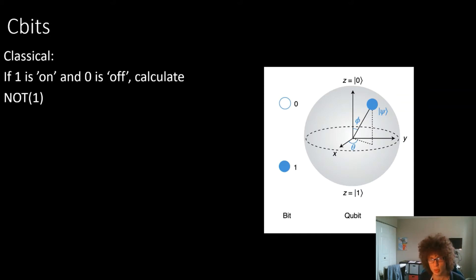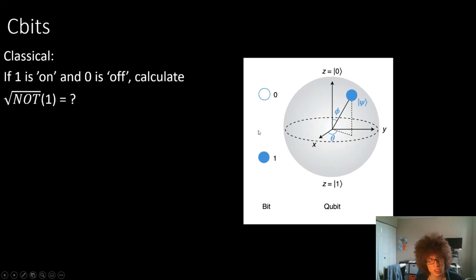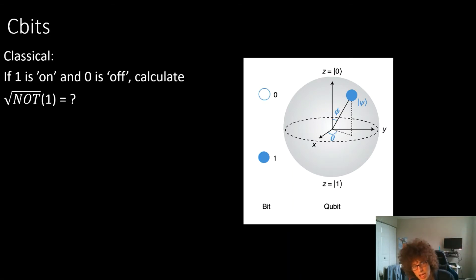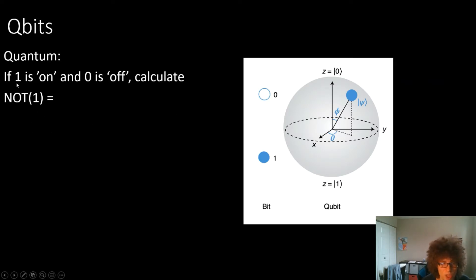For a more tangible example, the paper discusses classical bits. If I ask you what is NOT(1), you'd say that's easy — NOT(1) is zero. But what if I asked you: what's the square root of NOT(1)? You can't just say 0.5, because ideally the square root of NOT times the square root of NOT should equal NOT, and 0.5 doesn't satisfy that. In the classical condition, this isn't really well-defined.